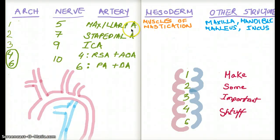So the structures that come from brachial arch 1, the brachial arch 1 are muscles of mastication, maxilla, mandible, malleus, and incus.